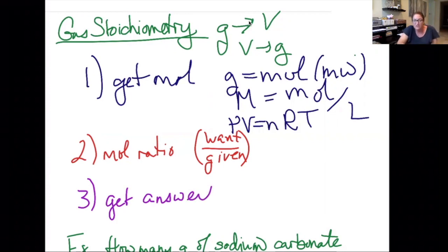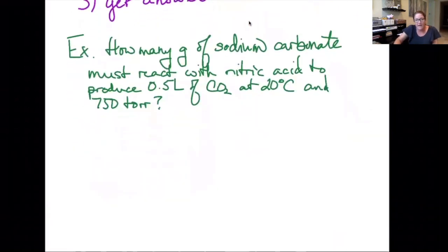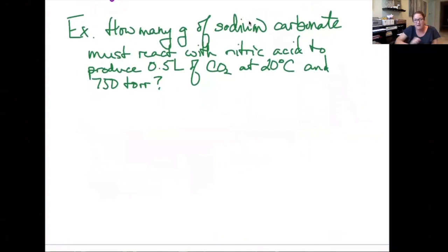So if we're going to do a mole ratio, we need to have a balanced equation, so we need to make sure that that's part of our problem solving. Let's take a look at an example problem here. How many grams of sodium carbonate must react with nitric acid to produce 0.5 liters of CO2 at 20 degrees Celsius and 750 torr?